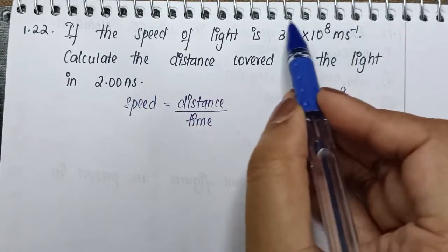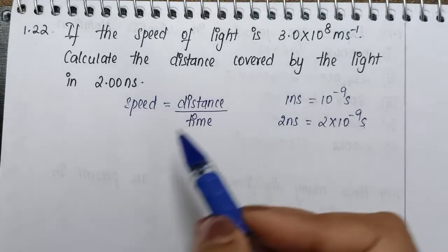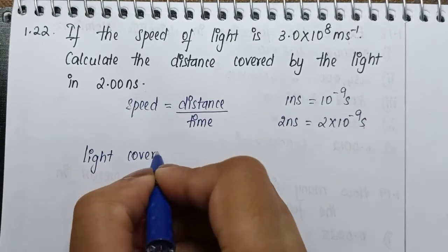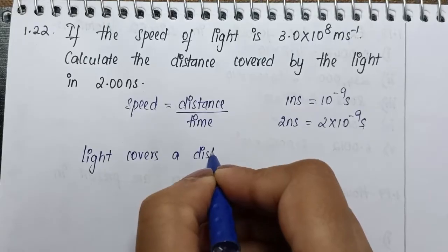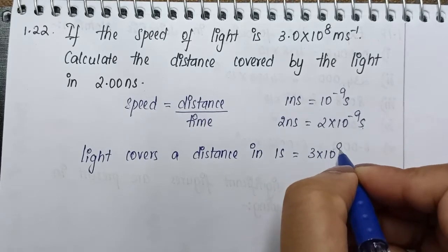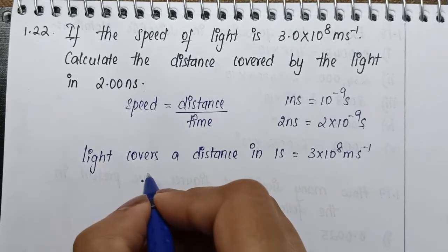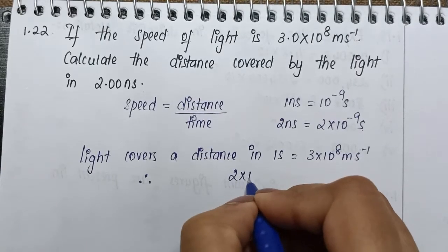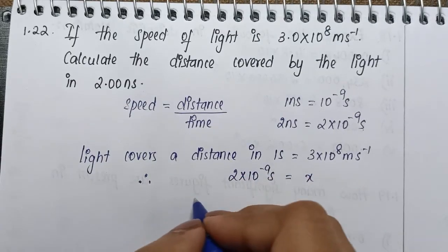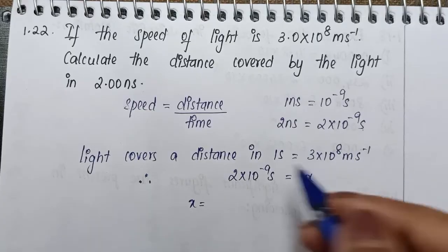Light covers a distance in 1 second equal to 3 into 10 to the power 8 meters per second. Therefore, for 2 into 10 to the power minus 9 seconds, the distance x that we need to calculate is equal to 2 into 10 to the power minus 9 into 3 into 10 to the power 8.